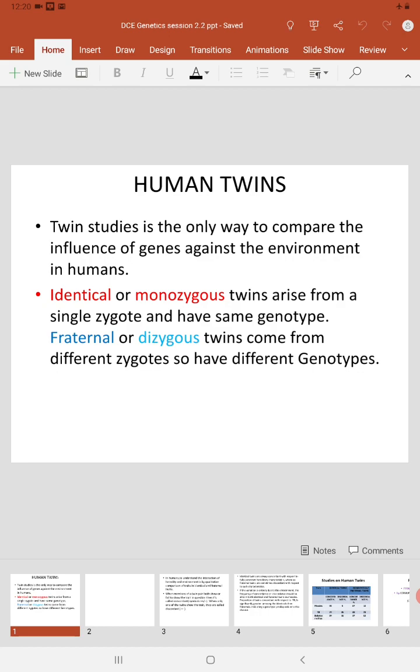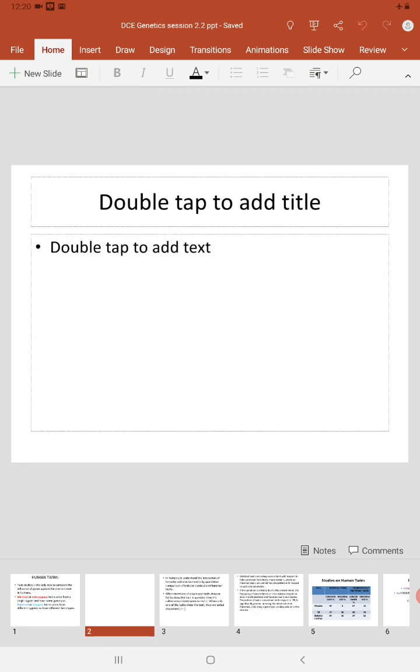Twin studies is the only way to compare the influence of genes against the environment in humans. There are two types of twins: identical or monozygous, and fraternal or dizygous. Let's understand what exactly is that.